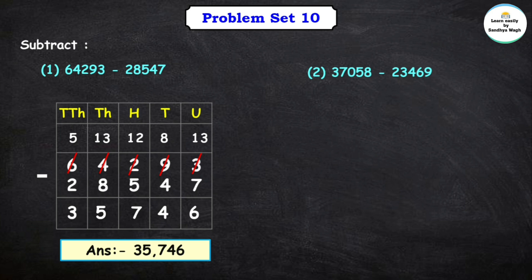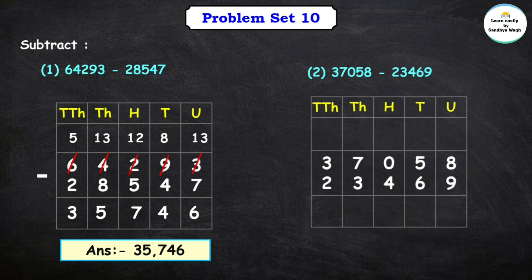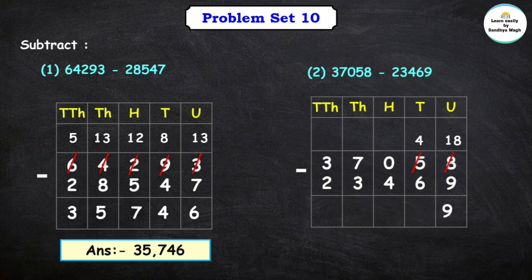37,058 minus 23,469. Let's put the subtraction sign. Now let's subtract the units place: 8 minus 9 — we cannot subtract, so we need to borrow 1. The tens place had 4, and after borrowing it becomes 3. Now for the tens place, 4 minus 6 — we cannot subtract since 4 is a smaller number, so we will borrow.